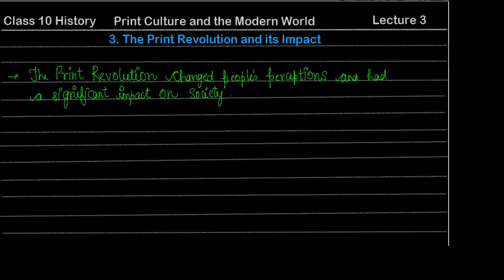One important thing to understand is that the print revolution changed people's perspectives and had a significant impact on society. Print revolution completely changed people's perceptions. After the print revolution, reading materials and books were much more accessible, and because of this, people had a new thought process. This was the first step of social change and social reform, and it had a significant impact on how society functioned.